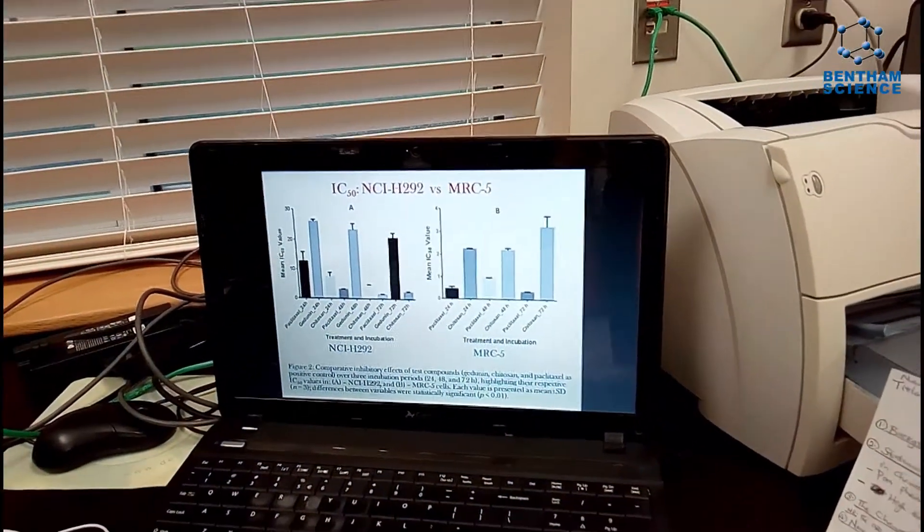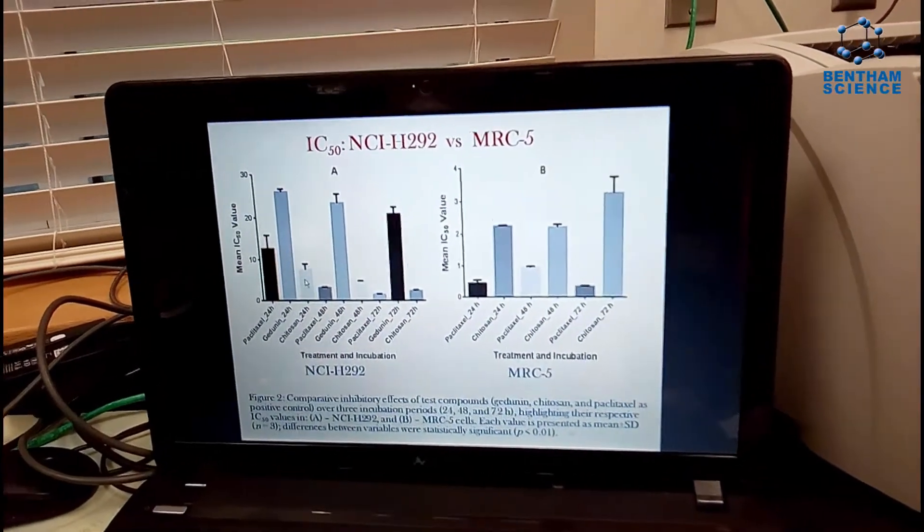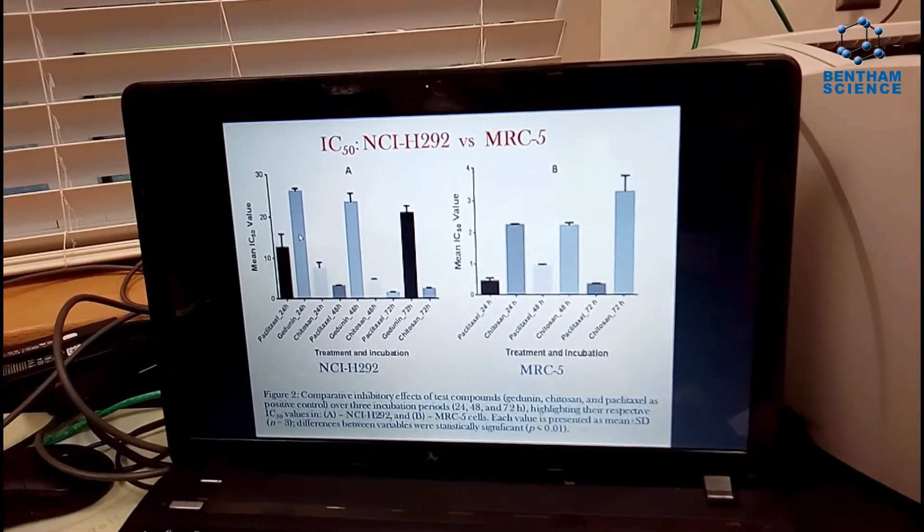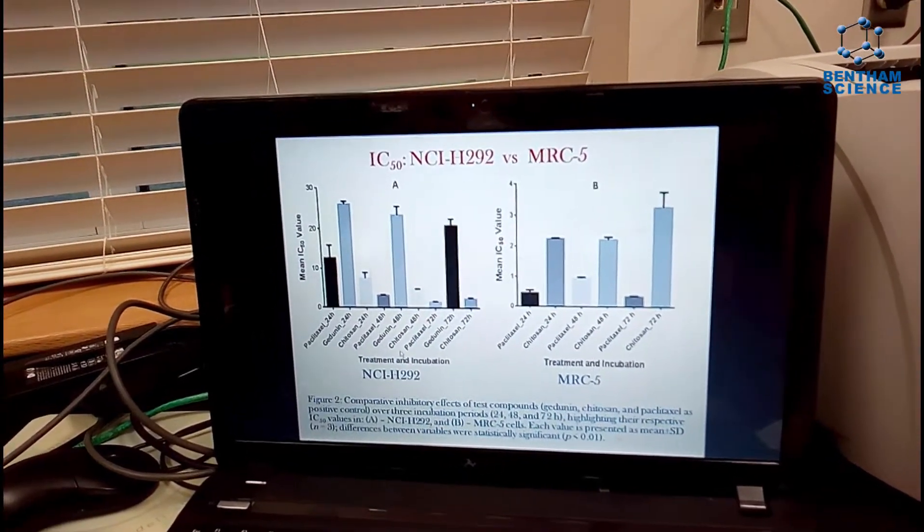A graphical illustration shows a much reduced IC50 value for chitosan when compared to jordanine and paclitaxel, which demonstrates its efficacy against the cancer cells.